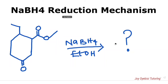In this video, we're going to talk about the sodium borohydride reduction mechanism. The first thing I want to point out is that sodium borohydride cannot reduce an ester, carboxylic acid, or amide. It can only reduce an aldehyde, ketone, and acyl chloride. So whenever you're given a compound, you need to first identify the functional groups present in order to know what part is being reduced.